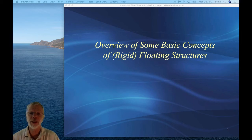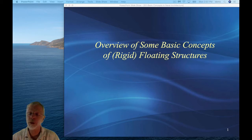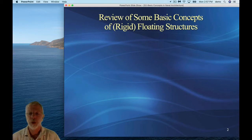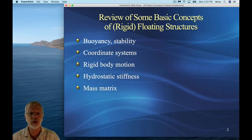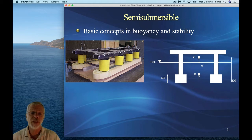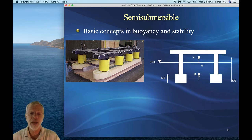In this video we review some basic concepts for rigid floating structures, which are also applicable for flexible structures. We're going to talk about buoyancy and stability, coordinate systems, hydroelasticity, rigid body motion, hydrostatic stiffness, and the mass matrix. On the left is a photograph of the MOBE module from the previous video, and on the right is a cross section — essentially a free body diagram — where we introduce symbols common in naval architecture.